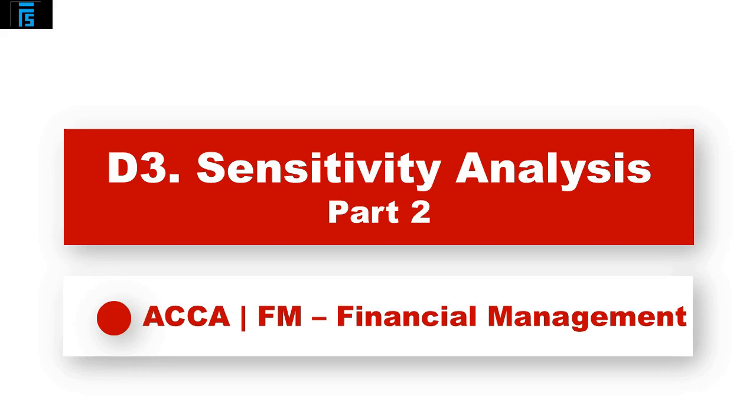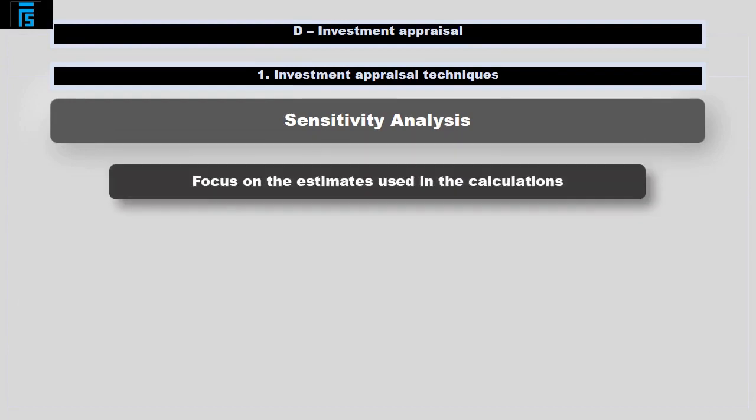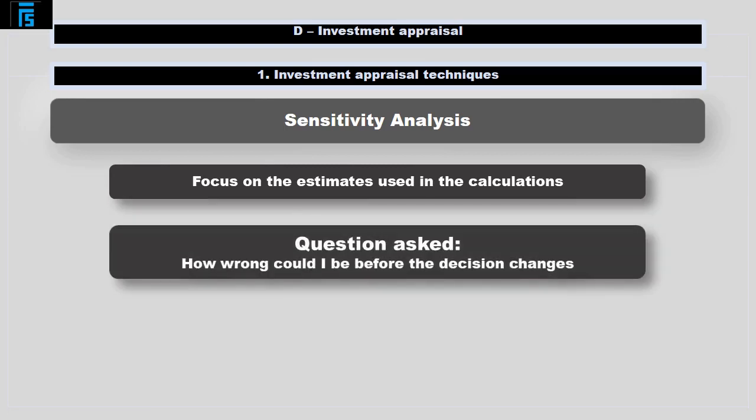We will be considering sensitivity analysis and the use of certainty equivalence. Once we have calculated the net present value, sensitivity analysis turns to the estimates we made in the calculation and for any one estimate asks the question: how wrong could I be before the decision changes?